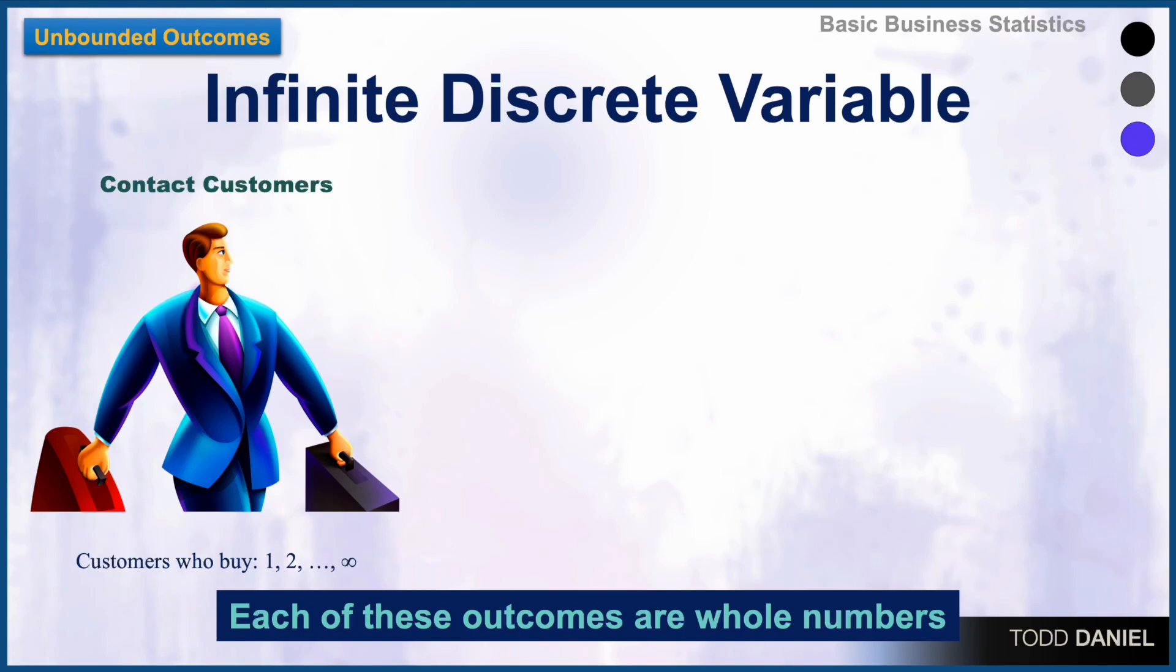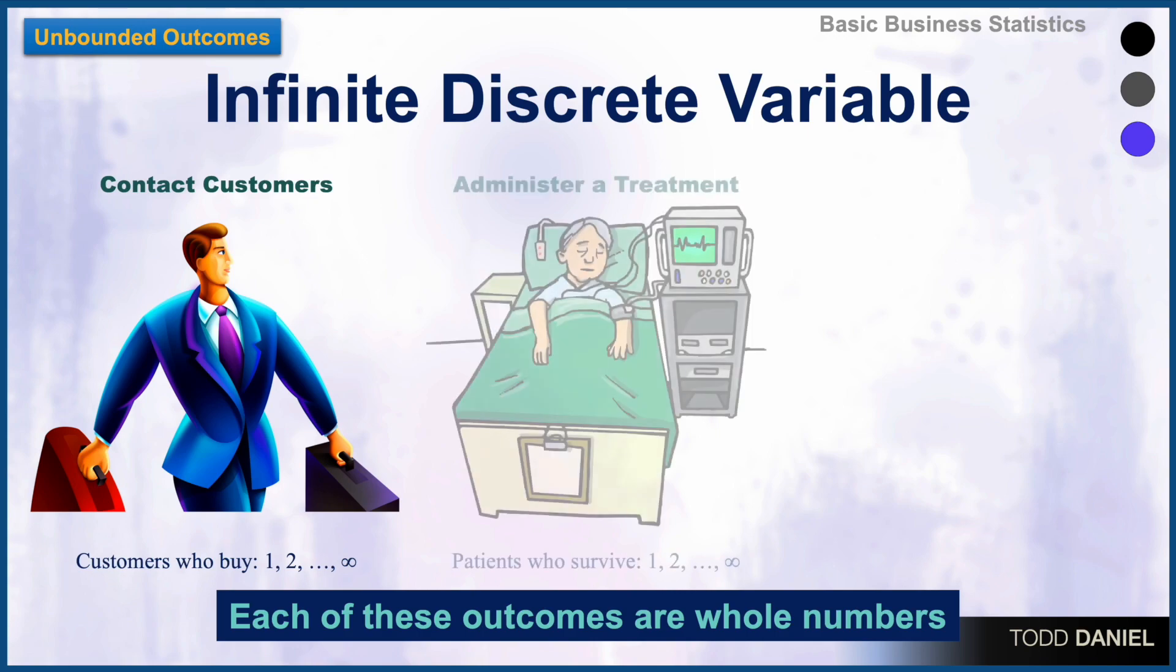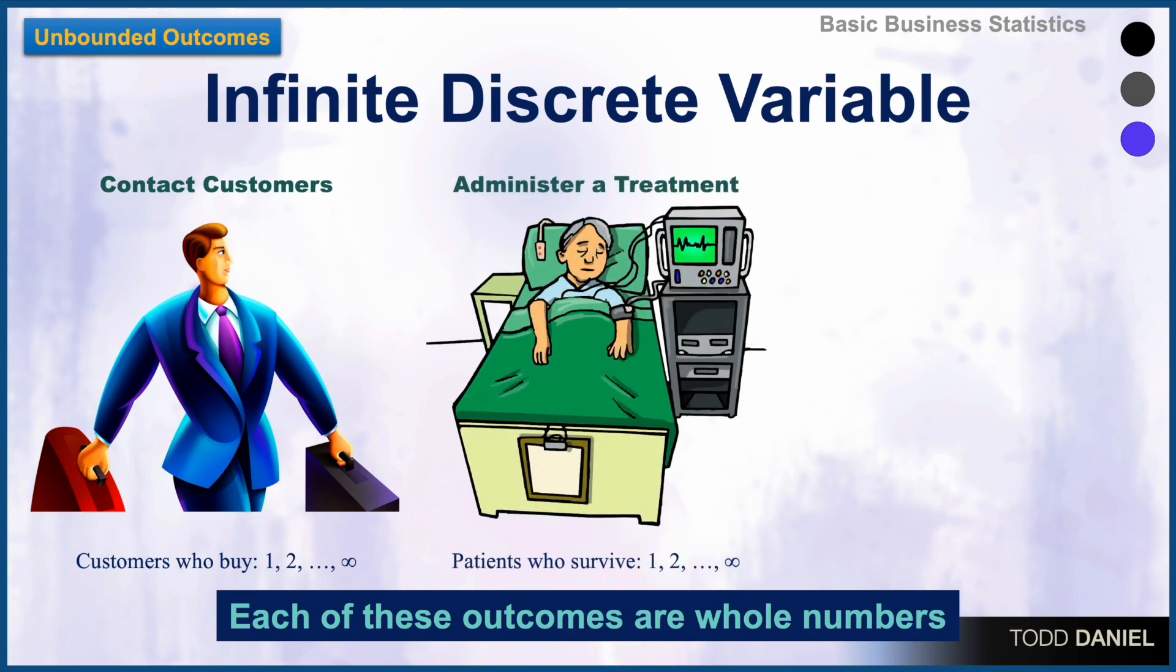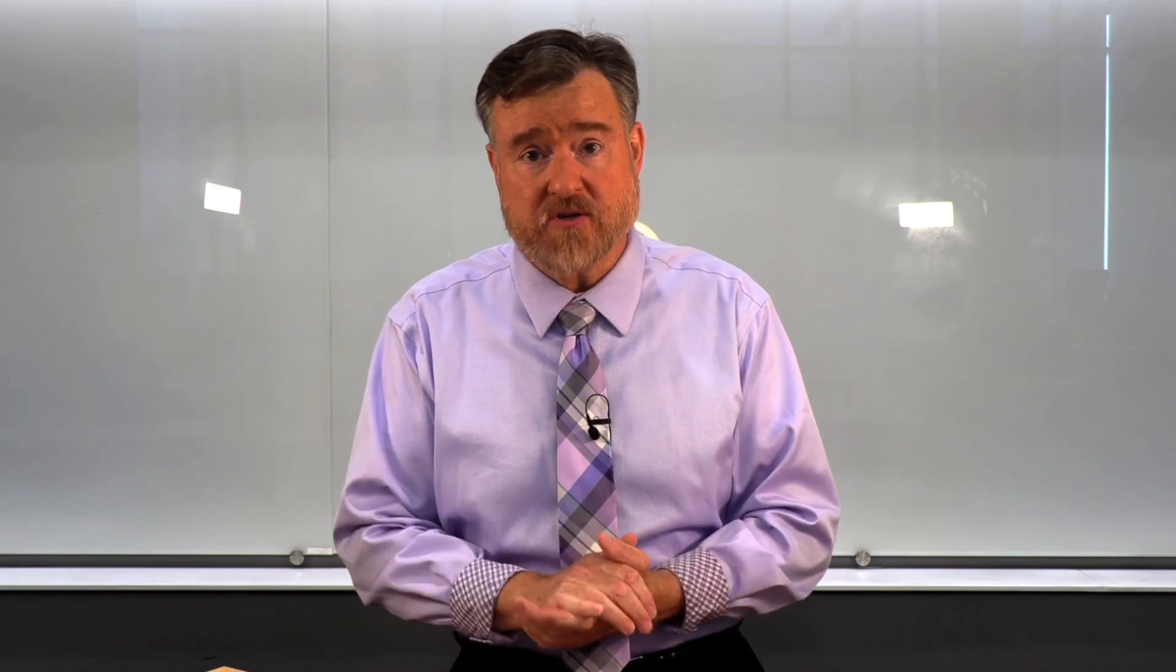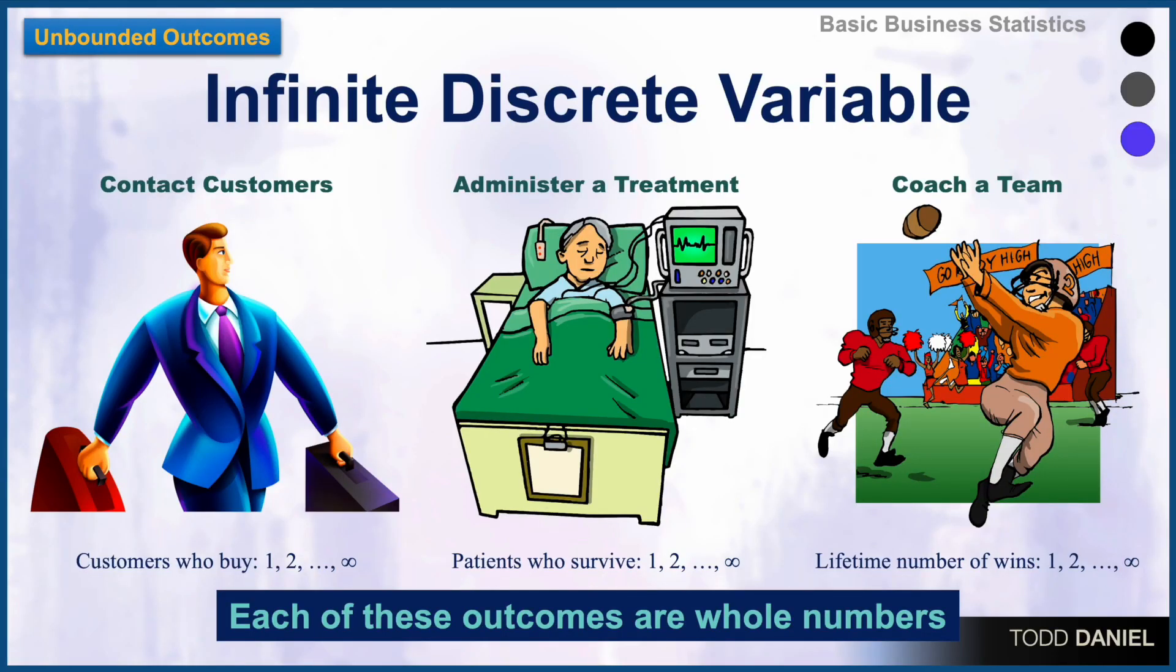On the other hand, we can have infinite discrete random variables, such as you contact customers to try to make a sale. How many customers bought? Zero, one, two, three. It could be infinite. You administer a treatment to patients. How many patients survive? Zero, one, two, three. The number could be, theoretically, infinite. Always, however, a whole number. You cannot have six point three patients surviving. Or you coach a football team. What is your lifetime number of wins? It will be zero, one, two, three, four. Theoretically up to infinity, however, always a whole number.